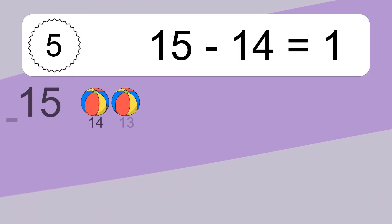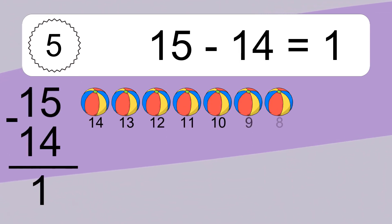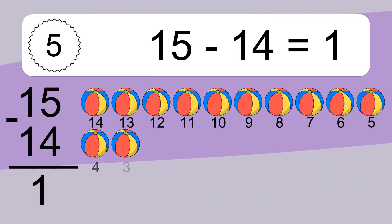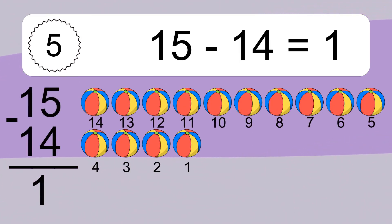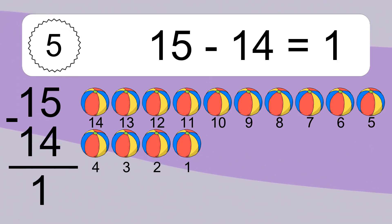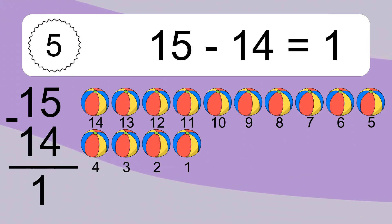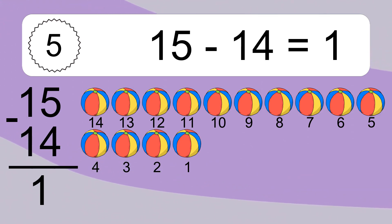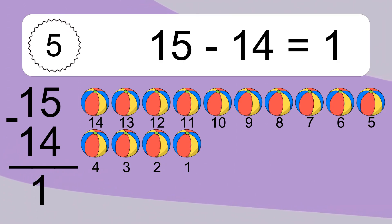15 minus 14 equals what? 15 minus 14 equals 1. Let's count it: 14, 13, 12, 11, 10, 9, 8, 7, 6, 5, 4, 3, 2, 1.